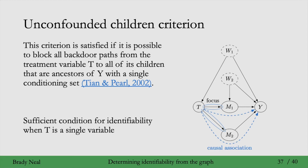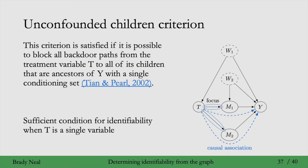The unconfounded children criterion is a sufficient condition for identifiability, but it isn't necessary. As an example of a necessary condition for identifiability: for each backdoor path from t to any child m of t that is an ancestor of y, it is possible to block that path. The intuition is that any causal association flowing from t to y must flow through its children that are ancestors of y, so we must be able to block any backdoor path that produces confounding associations.